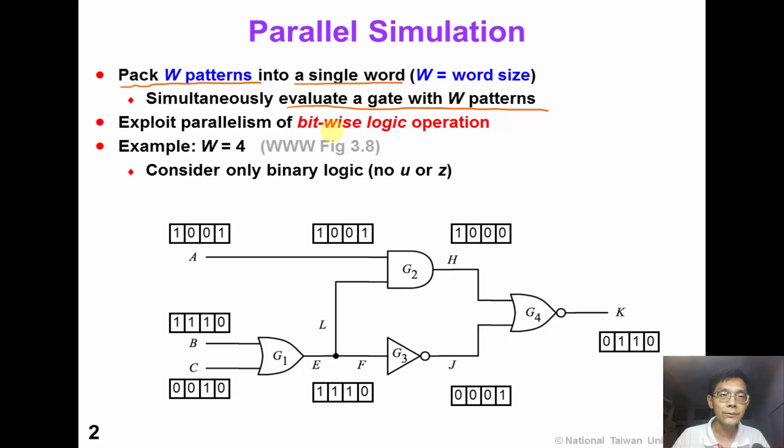In this following circuit example, where W equals 4, we pack 4 patterns into a single word. For primary input A, in the first pattern it is 1, in the second and third pattern it is 0, in the fourth pattern it is 1.